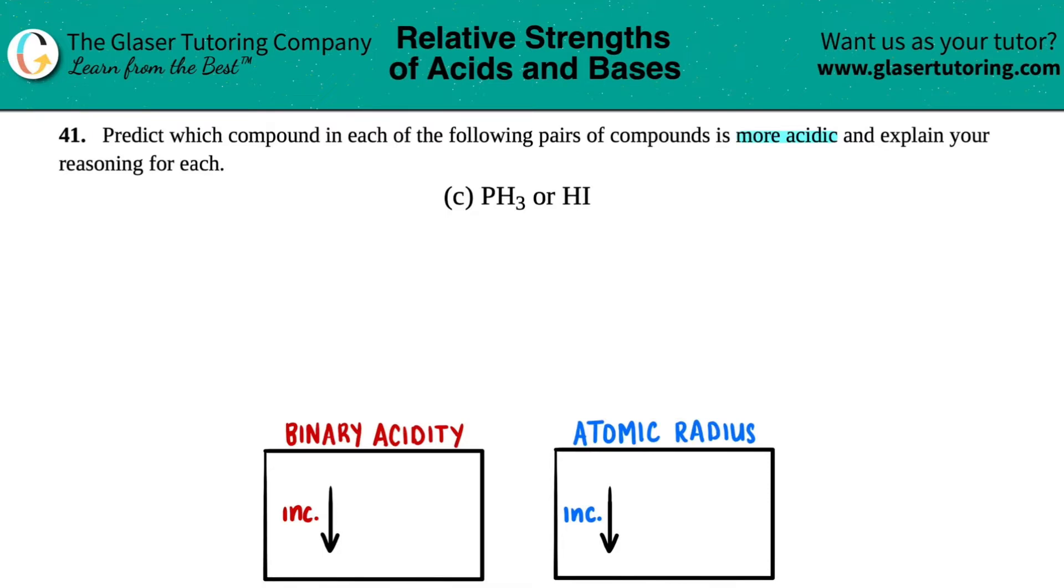Basically in gen chem, there's binary acids and then there's oxo acids. Binary acids is when you have a hydrogen element and then you see another element. Basically, the idea is that you can only have two elements total, and one of them has to be a hydrogen.